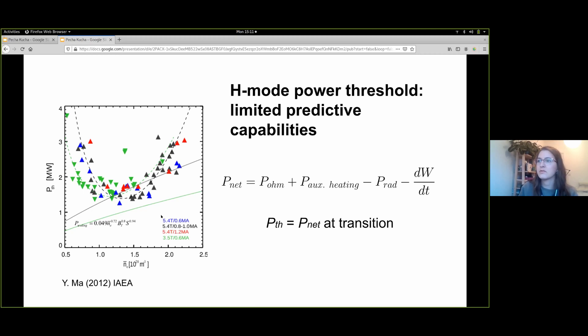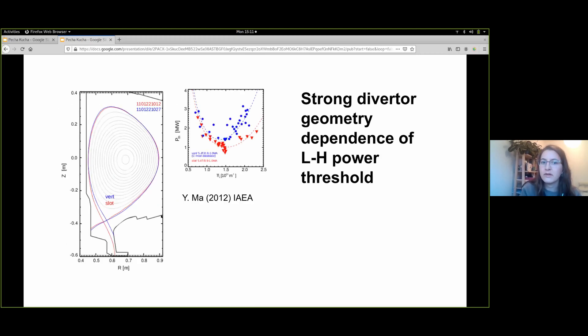One of the less well-studied dependencies is the divertor geometry. Experiments on CMOD compare power threshold versus density plots for a vertical divertor and a slot divertor configuration, with results showing a significant reduction in the power threshold for the slot divertor.